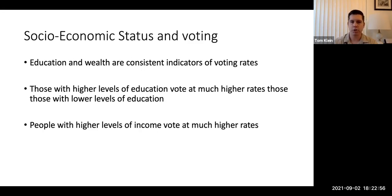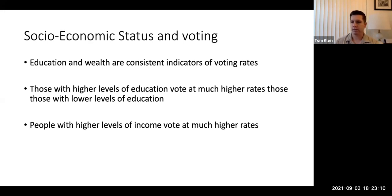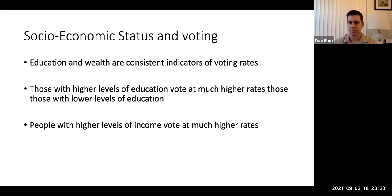Another indicator of voting is socioeconomic status or wealth. Education primarily and wealth are consistent indicators of voting rates. Every level of education that you get higher, the likelihood of voting increases. Even with a high school degree, the statistics of voting likelihood increase over those who do not have a high school degree — and same with college, secondary degree, et cetera. Also, people of higher levels of income tend to vote at much higher rates. Why do you think that is? Maybe they feel like they have more to lose — if there's a tax increase, maybe it affects them more.